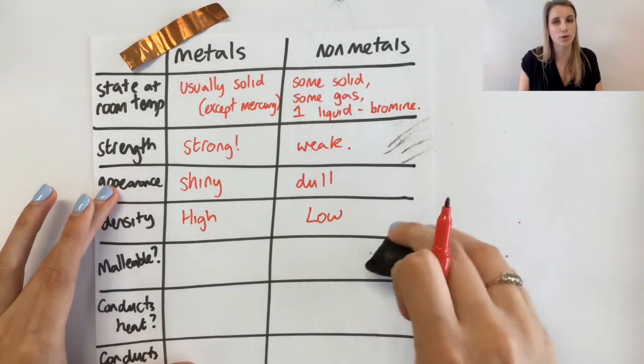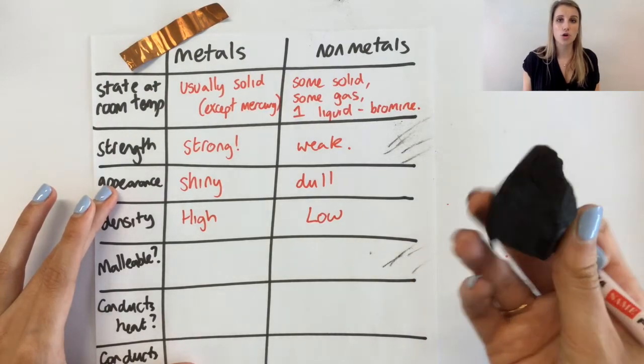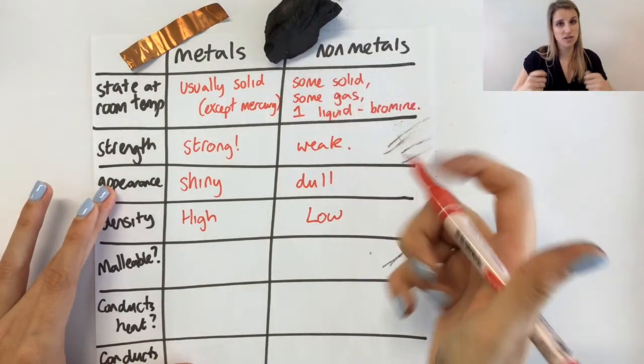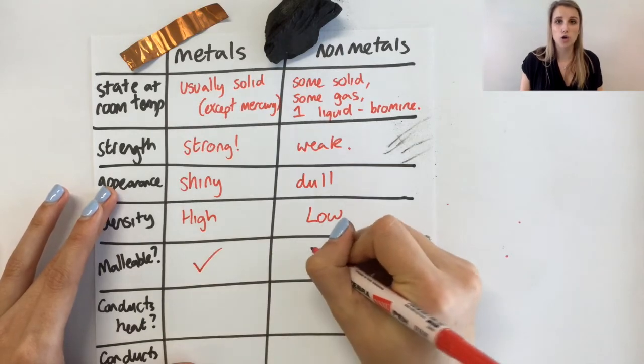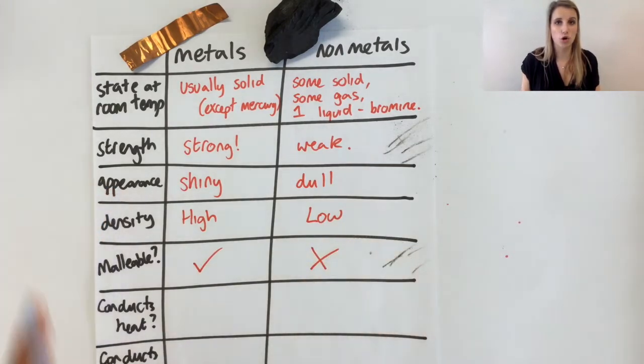So metals are normally malleable. That's why they can be used in wires and things that bend. And non-metals are completely non-malleable.